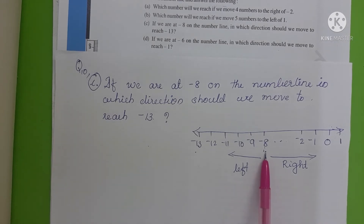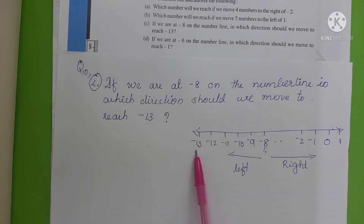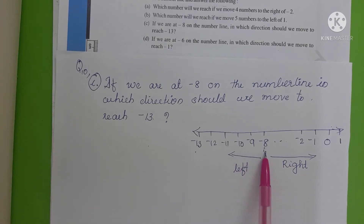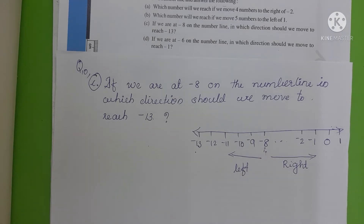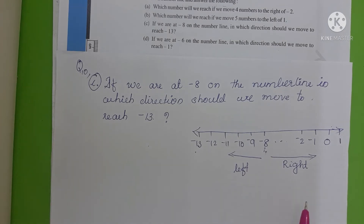We stand on the starting point, minus 8. We can see that minus 30 is present on the left side of minus 8. So we move on the left side. The answer is to move in the left direction to reach minus 30 from minus 8.